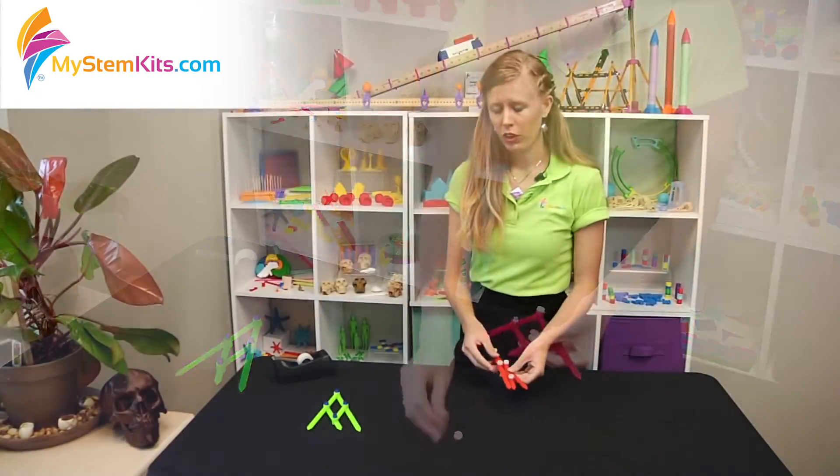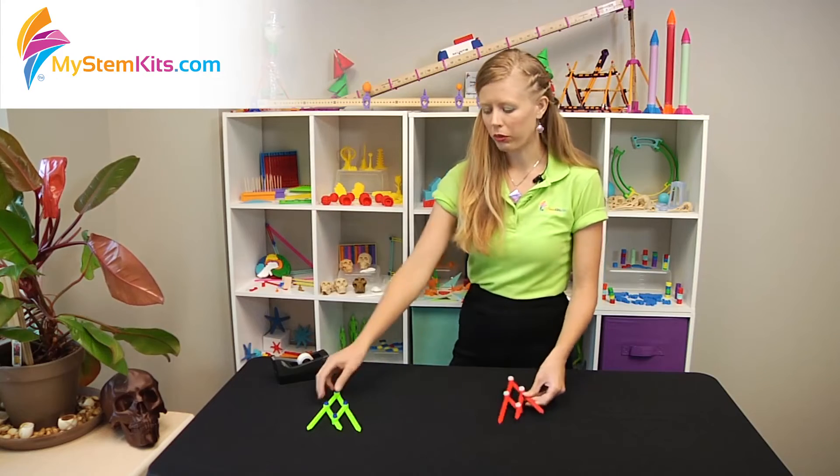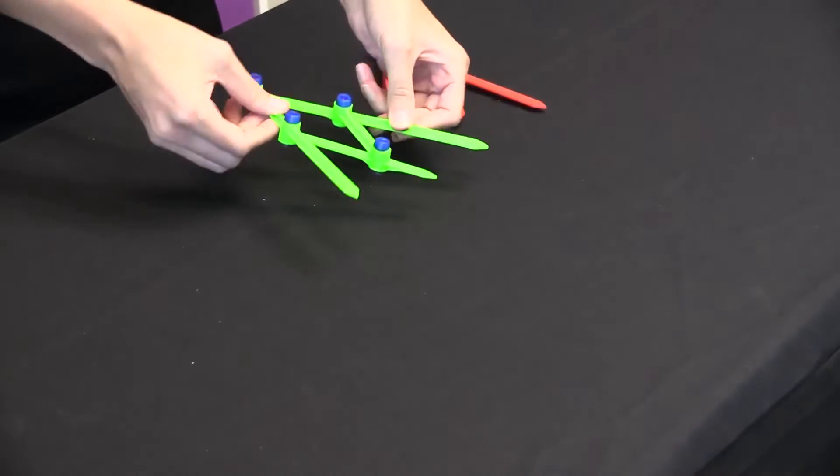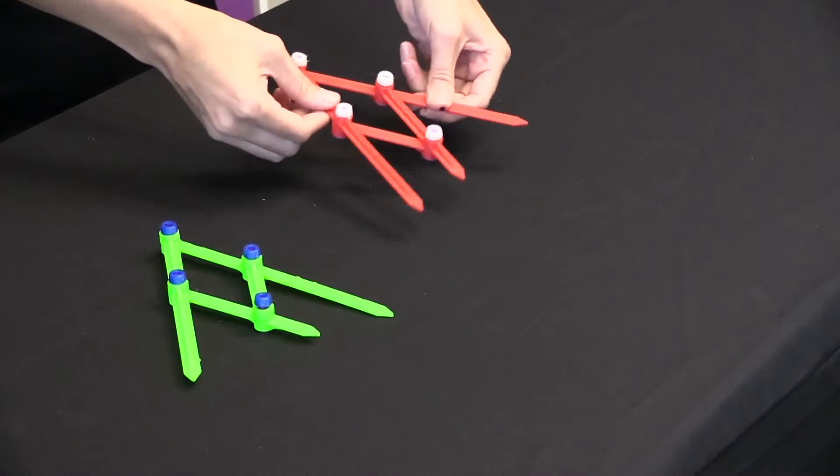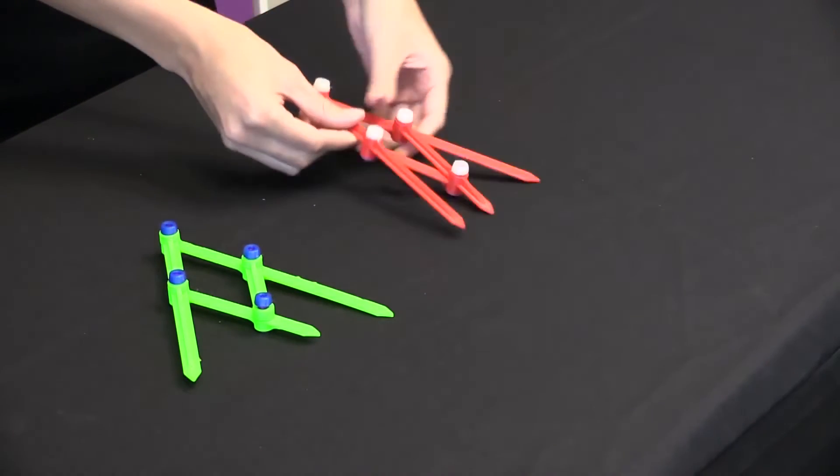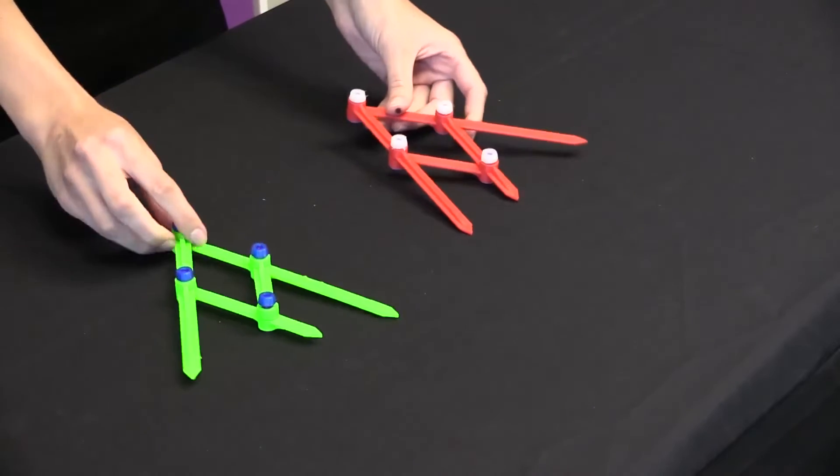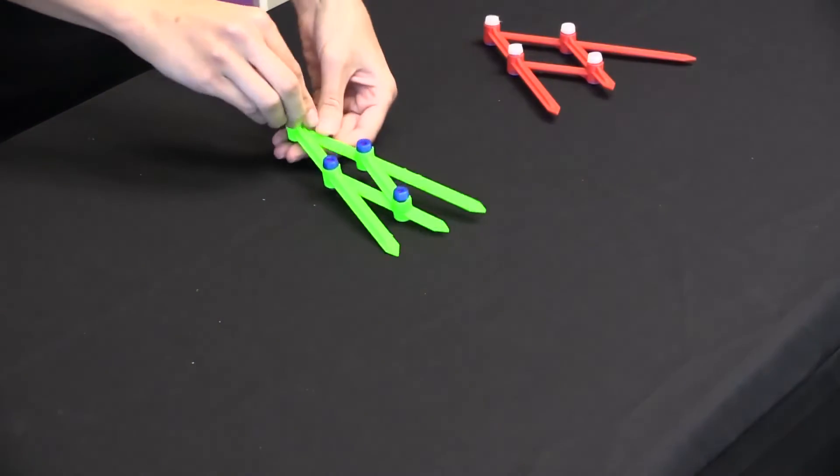Now depending on your printer, it may be a little bit loose and wobbly, kind of like this guy here - he wobbles around quite a bit compared to something like this that doesn't wobble too much. So if you do have one that wobbles more like this, there's a really easy fix.